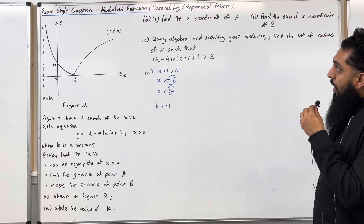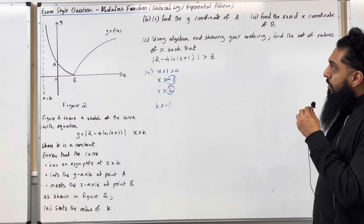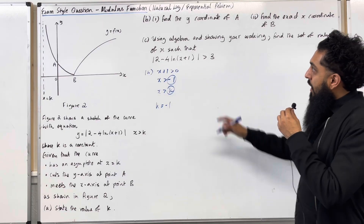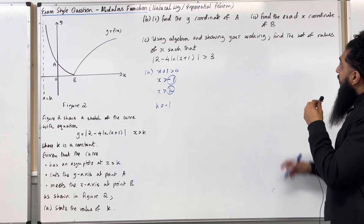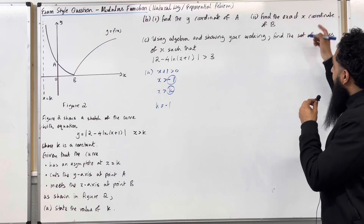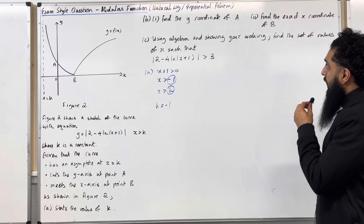Let's have a look at part B of the question. Part 1: find the y-coordinate of A. Part 2: find the exact x-coordinate of B.